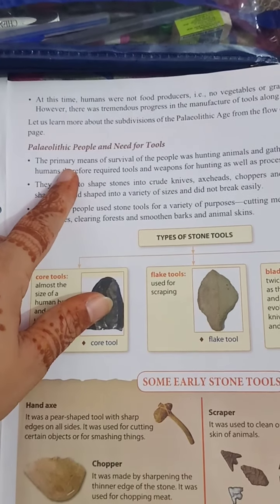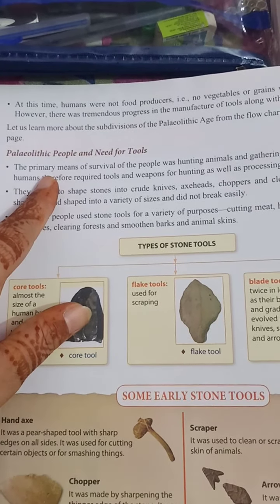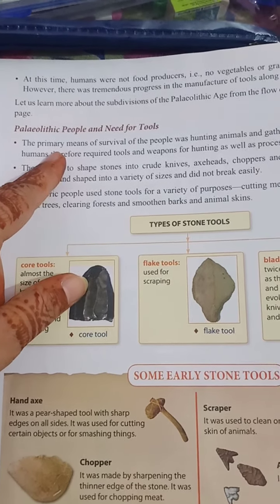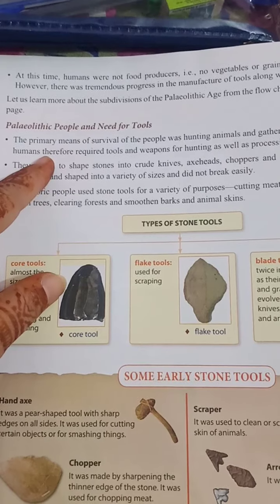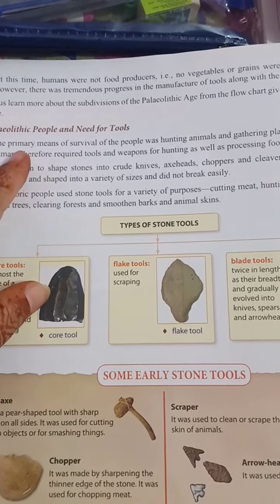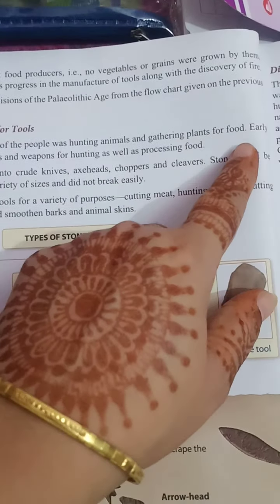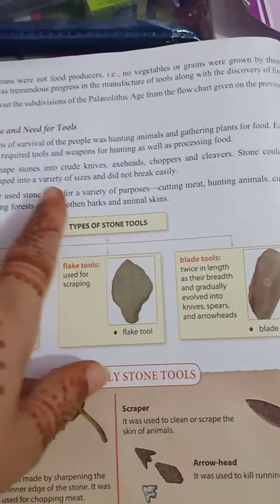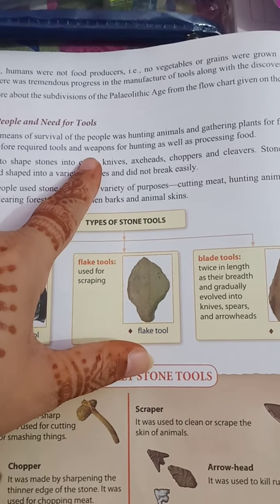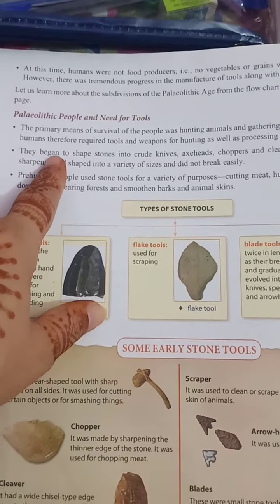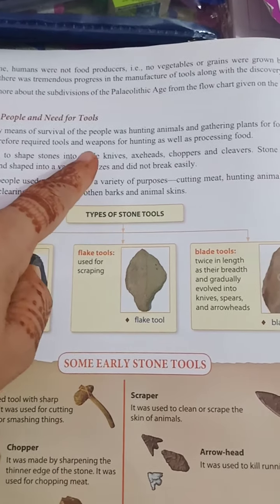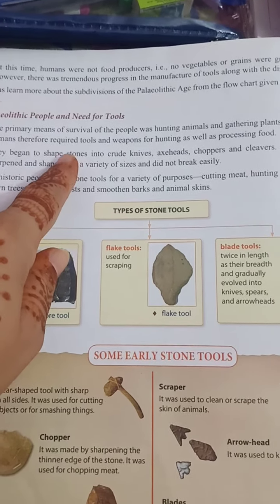The next topic is Paleolithic people and their need for tools. We will see how the people lived at that time and why they used tools. The primary means of survival was hunting animals and gathering plants for food. Early humans therefore required tools and weapons for hunting as well as processing food.